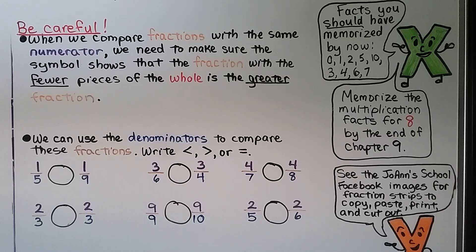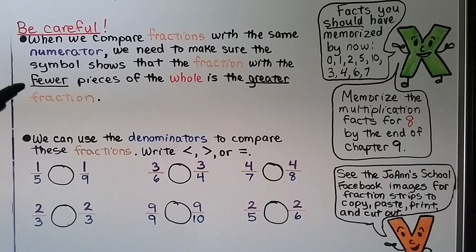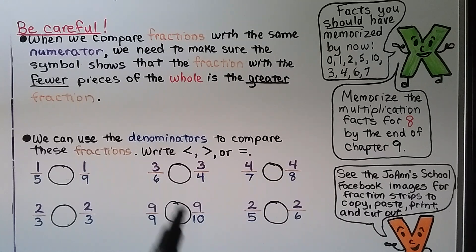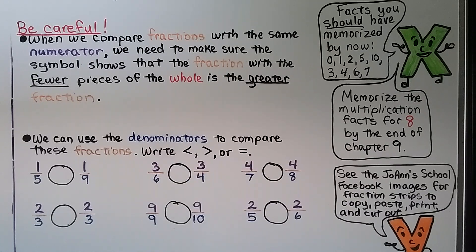Now be careful: when we compare fractions with the same numerator, we need to make sure the symbol shows that the fraction with fewer pieces — the lower denominator — is the greater fraction. We can use the denominators to compare these fractions and write less than, greater than, or equal to between them.